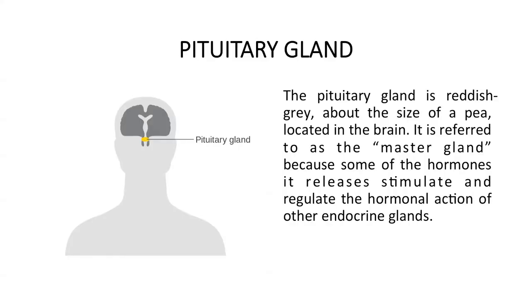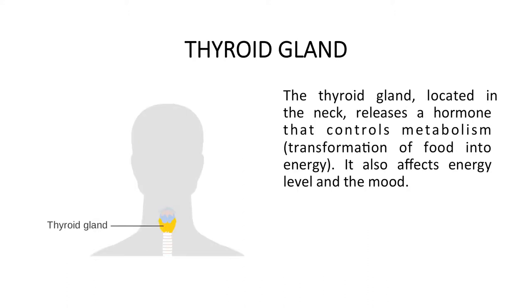This system is a collection of ductless glands that controls various body functions. The endocrine glands secrete chemicals that send signals by releasing hormones directly into the blood stream. The pituitary gland is reddish gray, about the size of a pea, located in the brain. It is referred to as the master gland because some of the hormones it releases stimulate and regulate the hormonal action of other endocrine glands. The thyroid gland is located in the neck and releases a hormone that controls metabolism, energy level, and mood.